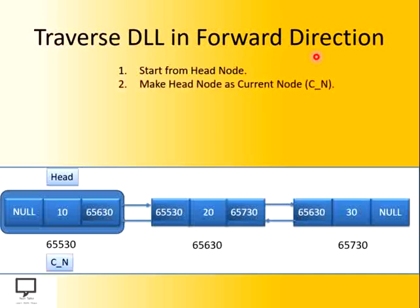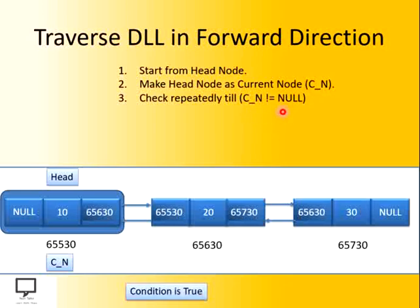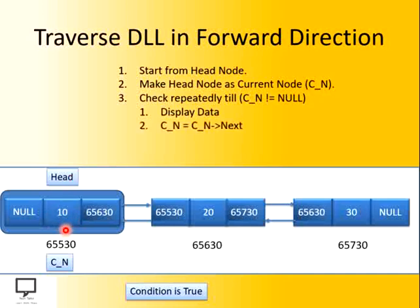Then, make this head node as the current node. After that, we have to check whether my current node is not equal to null. If the condition is true, we enter into the loop and display the data, because traversal is nothing but the display of the data. We will display its data part, the information part. Then, we move to the next node of the doubly linked list by executing this statement — we are updating the current node with the current node's next field.